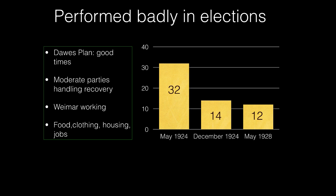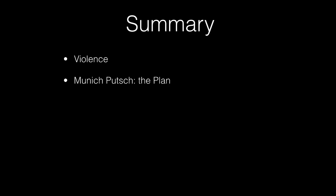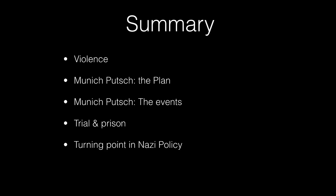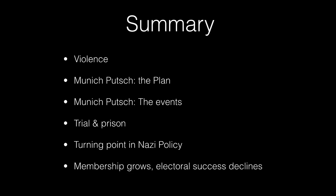To summarize: Nazi policy moved from violence, culminating in the Munich Putsch of 1923. You should know the plan, the events, and how it essentially failed. Note the importance of Hitler's trial and imprisonment - especially the publicity gained, and the publication of his views in Mein Kampf. The Munich Putsch was a turning point: it led the Nazis to pursue electoral success instead. They grew significantly in membership and organizational strength, but throughout the 1920s they were simply not electorally successful.